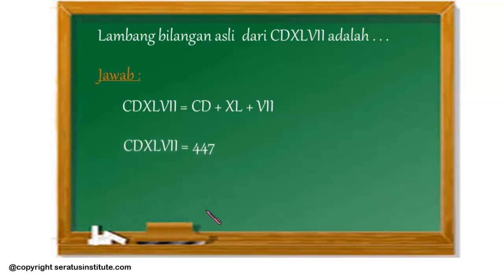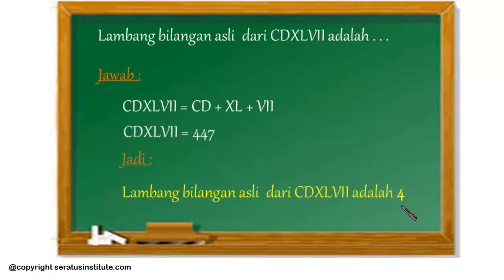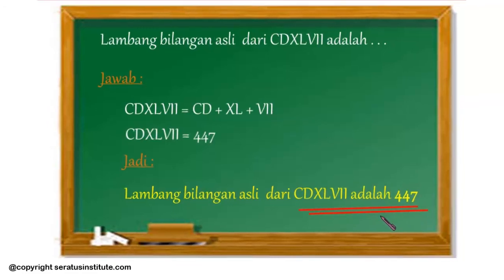Dari sini bisa kita simpulkan. Jadi, lambang bilangan asli dari CDXLVII adalah 447. Ini jawabannya.